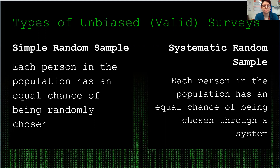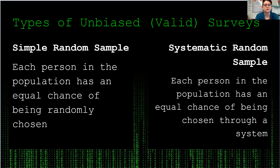The other type of valid survey that gives unbiased results is a systematic random sample. Like the first type, each person in the population has an equal chance of being chosen, but the difference is through a system. For example, if I wanted to survey fans at a football game, a systematic random sample would be going to the ticket counter and asking every fourth person in line what team they're there to see. I'm not controlling where people get in line, so everyone has a chance of being chosen, but I do have a system for how I'm selecting the people I survey.